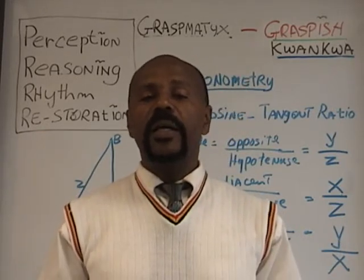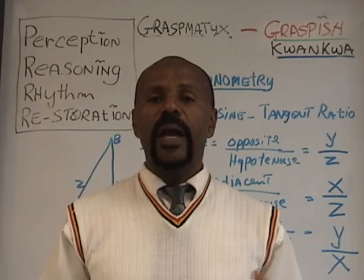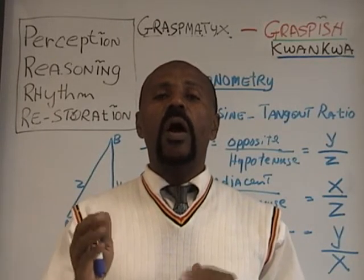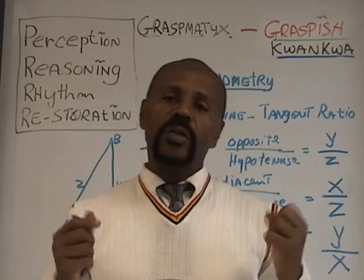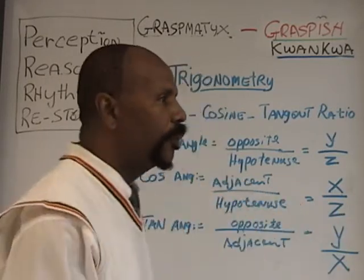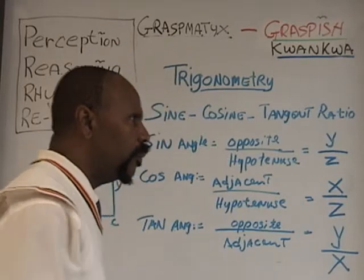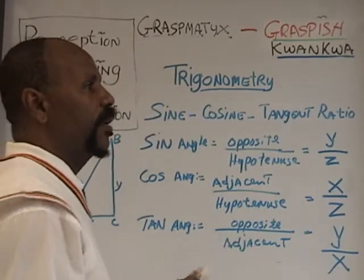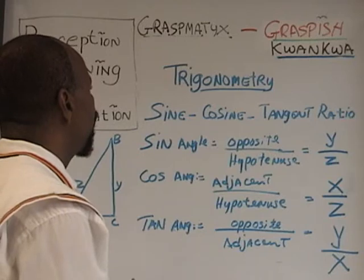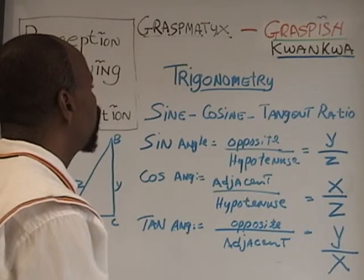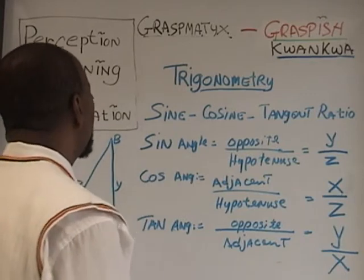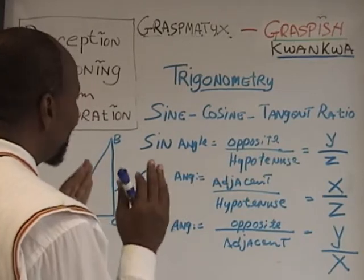Geography is talking about a photogenic explanation — an image, which is photo — and the measurement of things upon the earth. Geometry is the measurement of things based on shapes and sizes upon the earth. Trigonometry, of course, means the measurement of the angles.